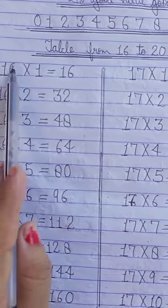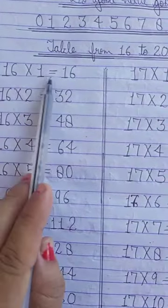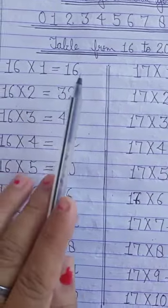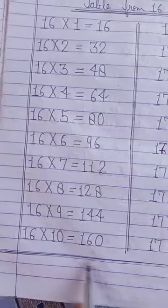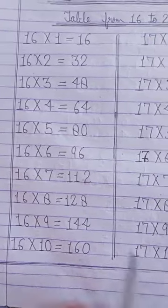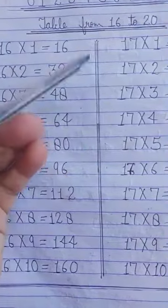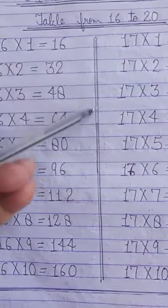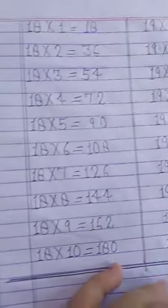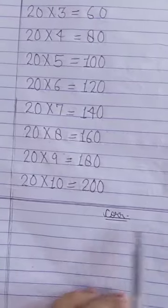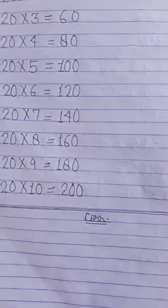For each number you have to use full box. That means upper line and lower line should touch. Writing should be neat and clean. After each table, you draw line like this with the help of scale and between each table, you have to draw line like this. Then after table of 20, you draw line and write C-O-R-R dot means correction. Thank you.